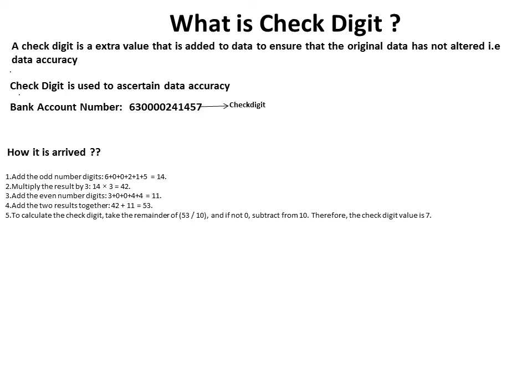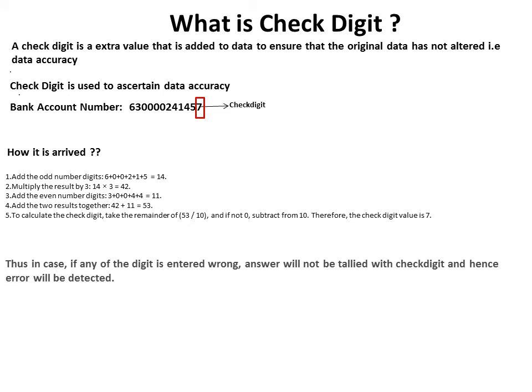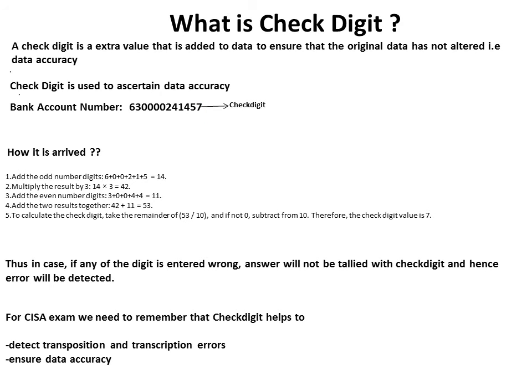The algorithm works as follows: first, add all odd-position digits; second, multiply the result by 3; third, add the even-position digits; then apply steps four and five. If you apply all five steps, the answer will be 7. If any of the digits in positions 1 to 11 are changed, the result will not be 7, and thus any wrongly entered digit will not match the check digit — and the error will be detected.